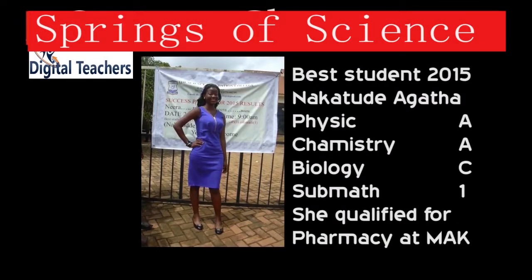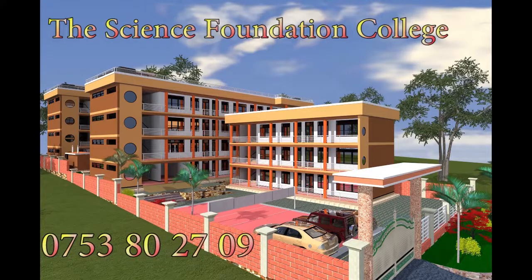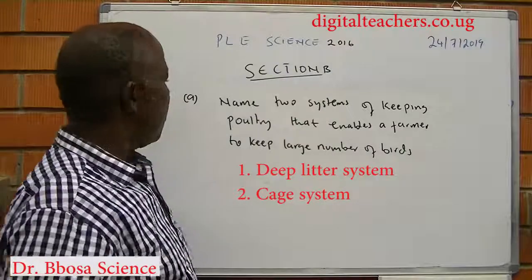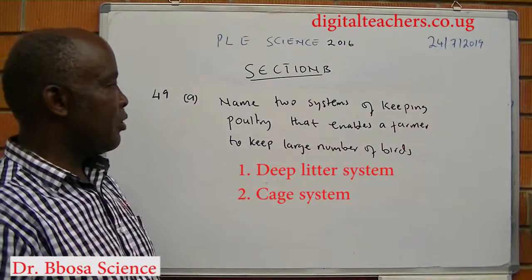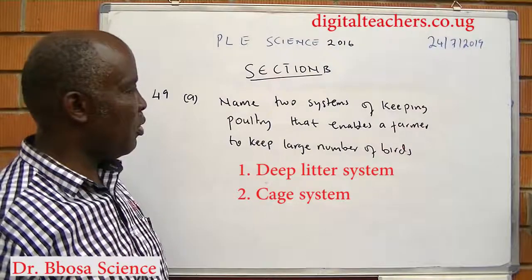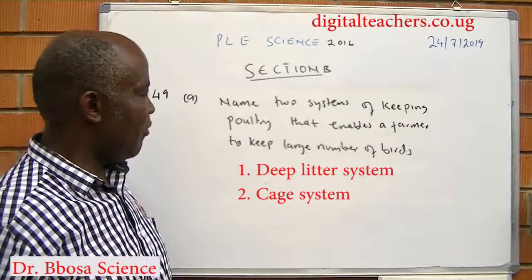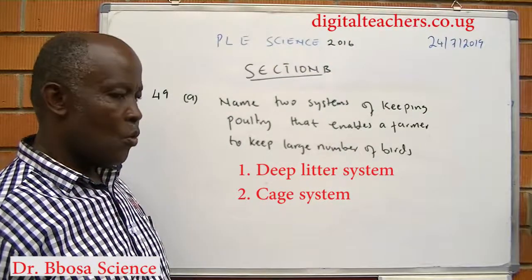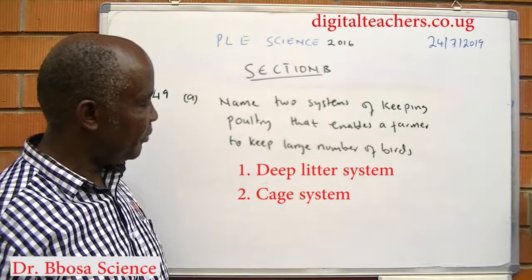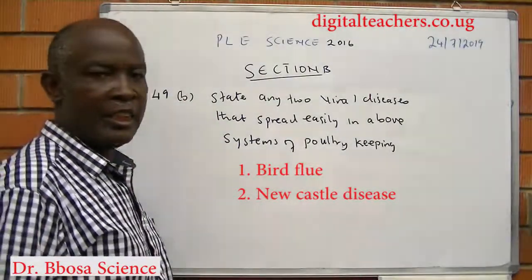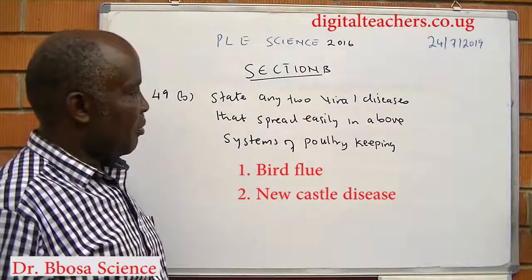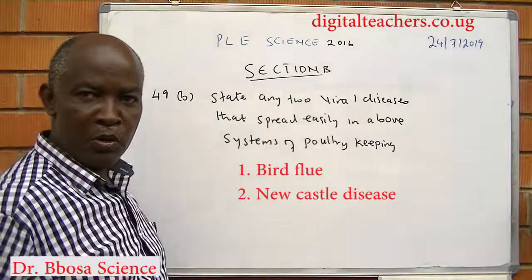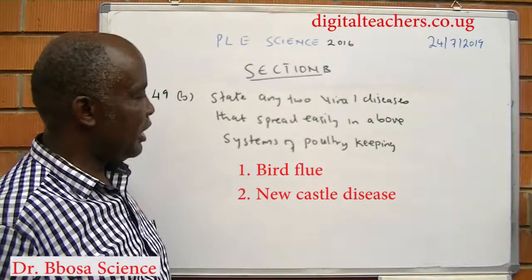Name two systems of keeping poultry that enable a farmer to keep a large number of birds. One is the deep litter system. State any two viral diseases that spread easily in the above system of poultry. One is bird flu.